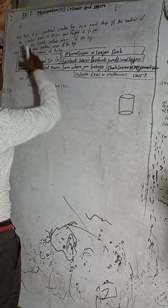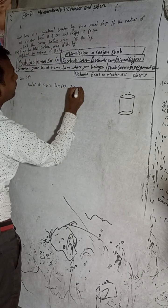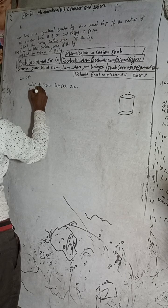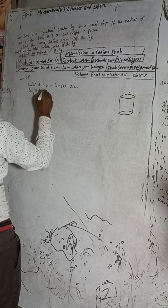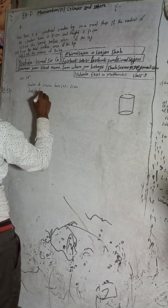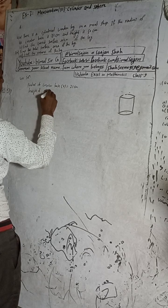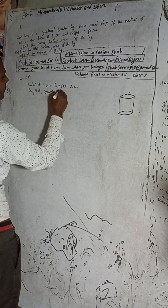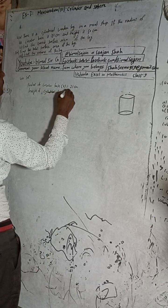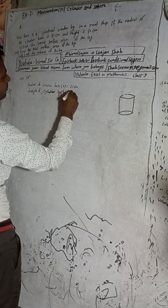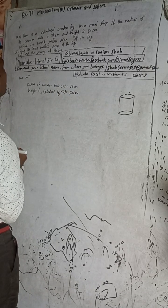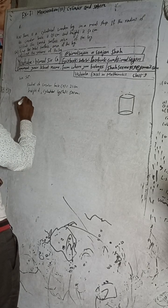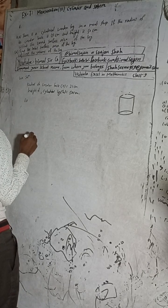So, radius r is equal to 21 cm and height is equal to 50 cm. Number one: we have to find the curved surface area.